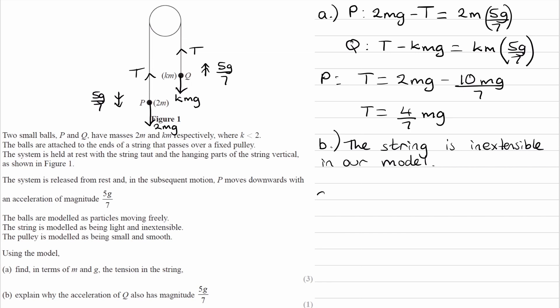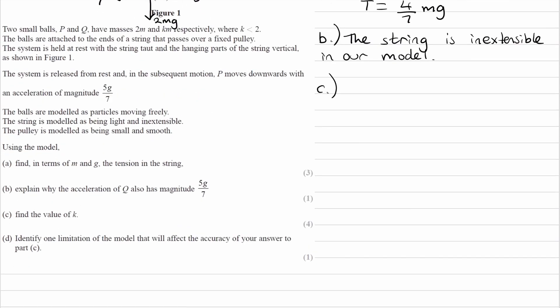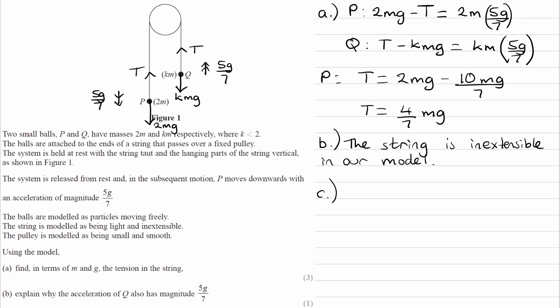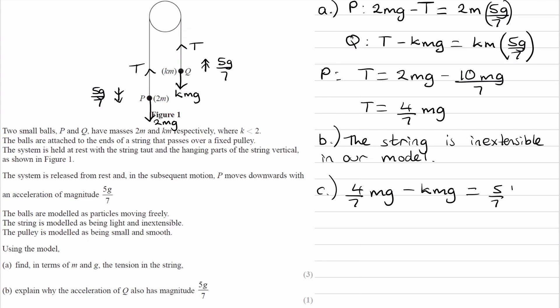So on to part c, c is asking us to find the value of k. So if we look back to the equations that we worked out in part a, well, we have the tension, 4 over 7 mg. This was our equation that involved k, so let's put these two things together. Let's put the tension into that equation, and then we can rearrange it for k. So t is 4 over 7 mg, take away kmg, and that's equal to this. I'm just going to rewrite that as 5 over 7 kmg. Now all of these terms have a factor of mg in them, so I'm going to divide the entire thing by mg, and then they will all cancel. mg, mg, mg, they will all cancel. And then we end up with 4 over 7 minus k is equal to 5 over 7k.